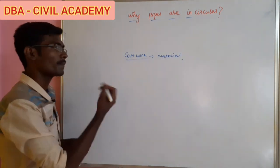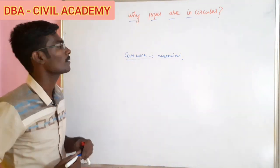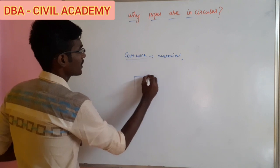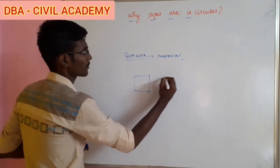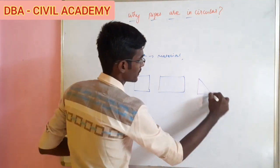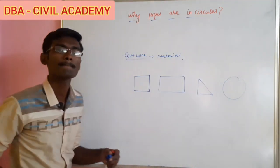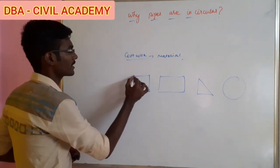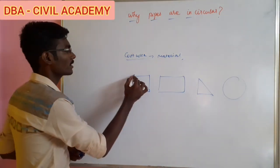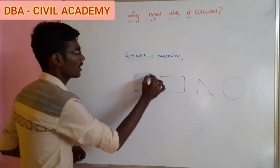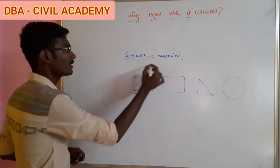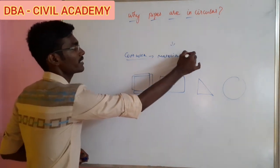How can we provide these materials? There is a perimeter — a square shape, a rectangular shape, a triangular shape, a circular shape. If you have a perimeter, you have to consider the perimeter. If you calculate the material quantity, the perimeter is a major factor. The material is a major factor.